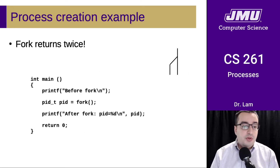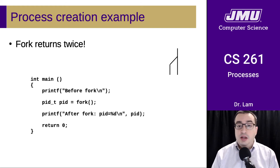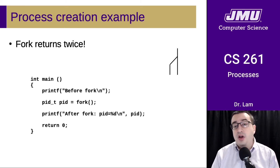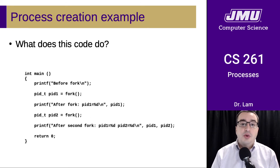Here's a code example where we're calling fork. It's worth thinking for a second about what this will output. If you run this code, you'll see that it prints "before fork" once, and then it prints "after fork" twice. One of them will print pid equals 0 — that is the child process. And one of the processes will print "after fork" with a number, and we know that's the parent process printing the process ID of the child. It's worth pausing the video and thinking about what this code will do.